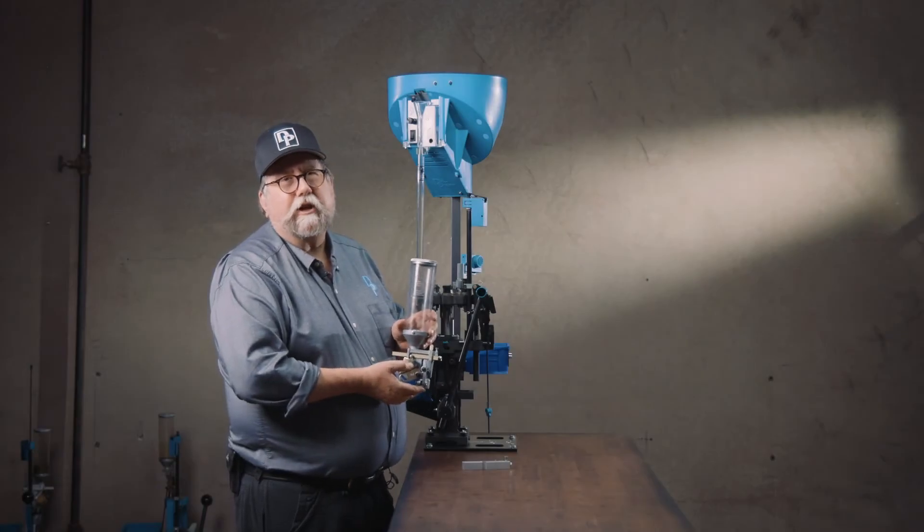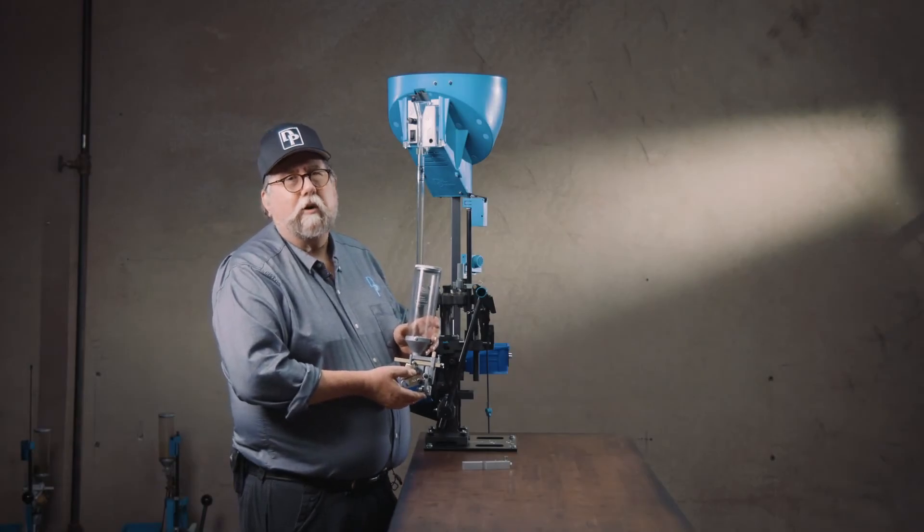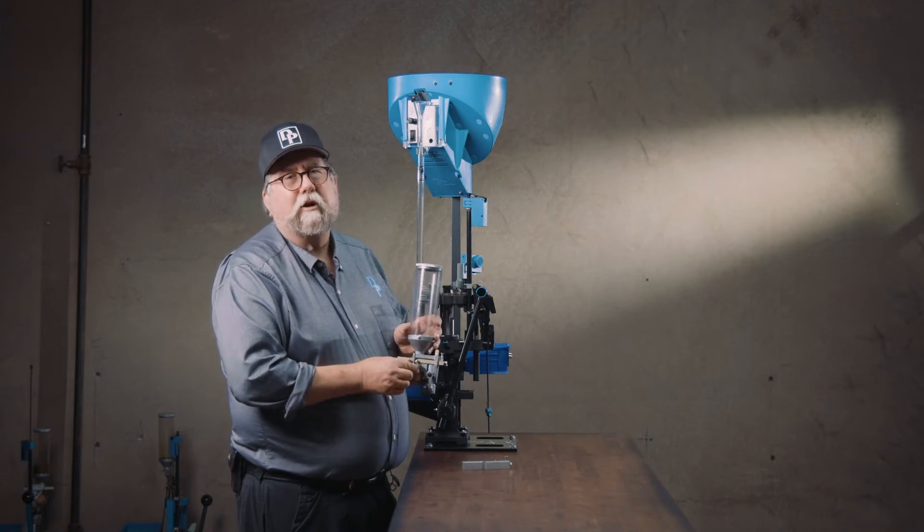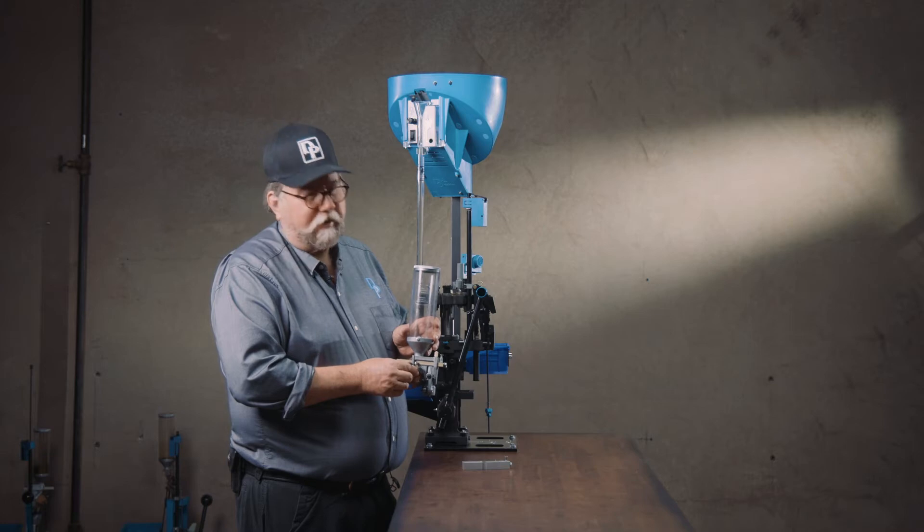Regardless of the cartridge that your Super 1050 is set up for, all Dillon powder measures ship with the small powder bar assembly installed in the powder measure.